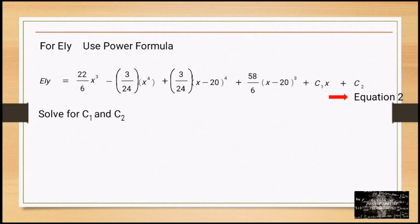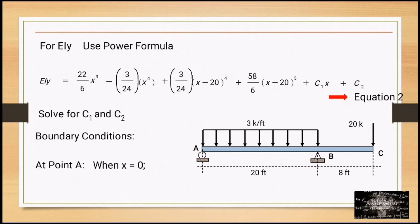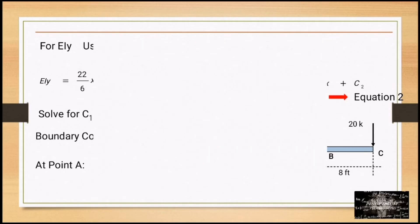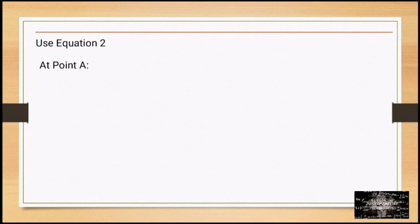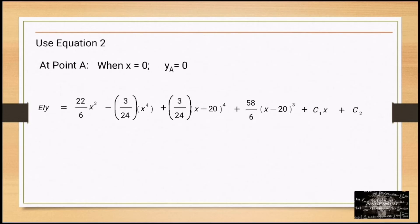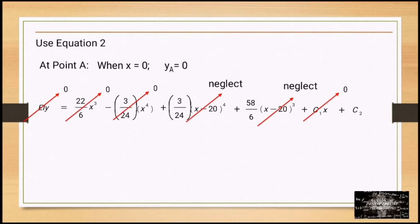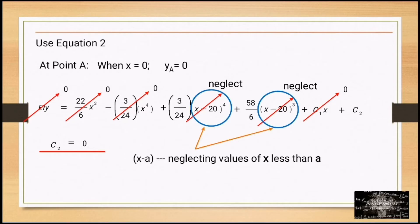Now solve for C₁ and C₂ using boundary conditions. At point A, when X equals 0, since it is a roller, the deflection y_A equals 0. Using Equation 2 at X equals 0, all terms vanish, so C₂ equals 0. Note: terms of the form (X−a) are neglected when X is less than a.